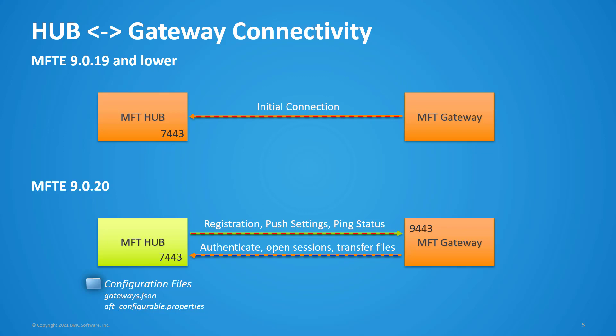Each hub holds a manually user-defined and synchronized list of all gateways. Each hub registers to each gateway with its public address, allowing the gateway to be able to communicate with it. The gateway starts to listen for external connections once it gets settings from the hub node.